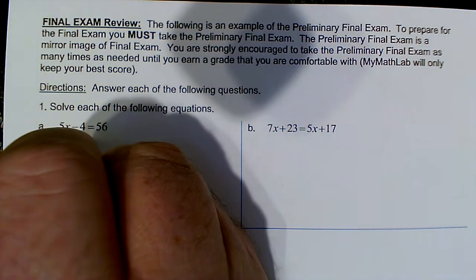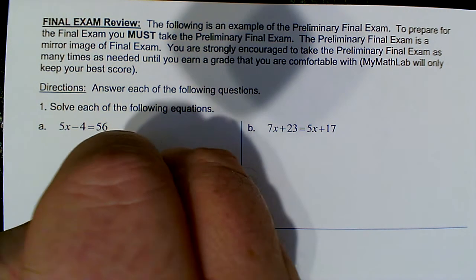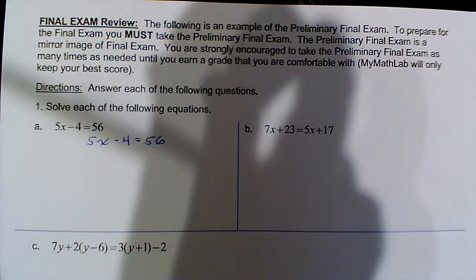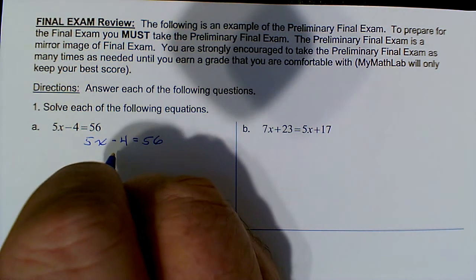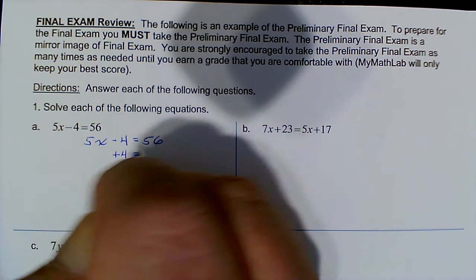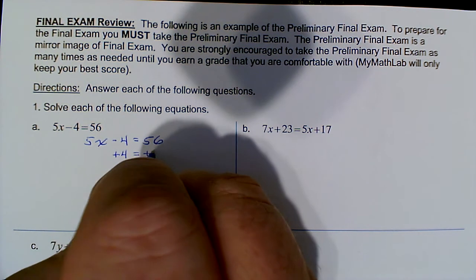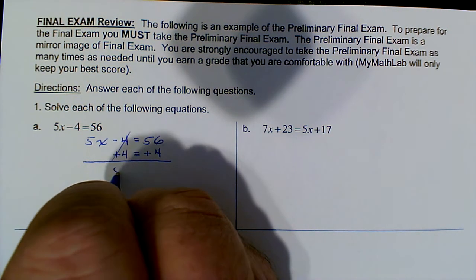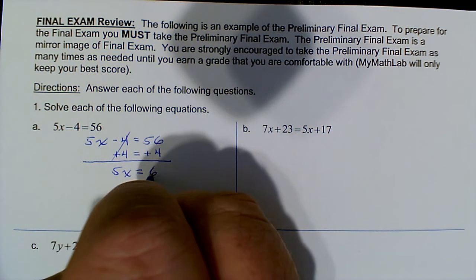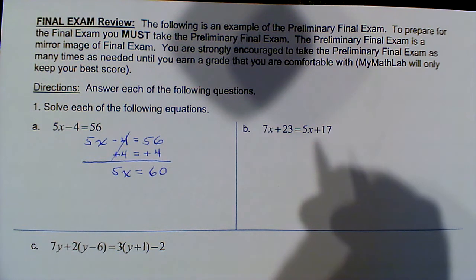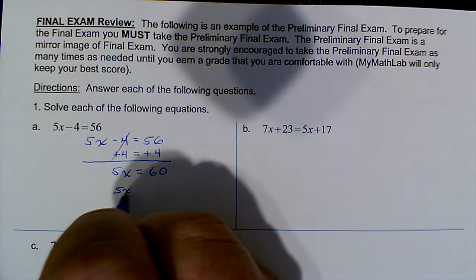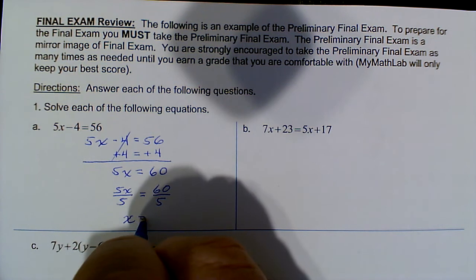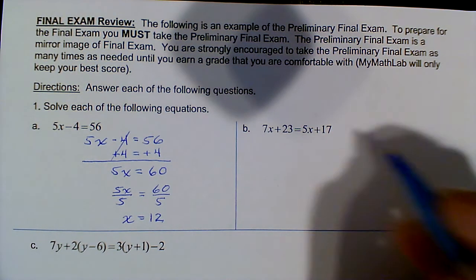The first set of questions involves solving linear equations. Let me recopy this: 5x minus 4 equals 56. To solve a linear equation, we need to get all the x's on one side and everything else on the other. We'll isolate the x by adding 4 to both sides — the 4s cancel. Bring down the 5x, do the arithmetic: 56 plus 4 is 60. Then divide both sides by 5, and we get x equals 12.